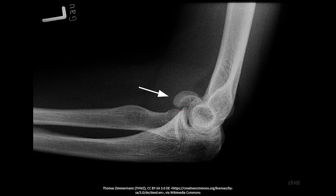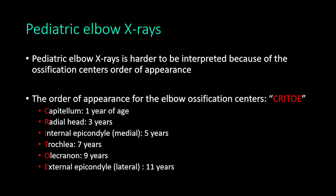In this example of a lateral elbow x-ray showing a capitellum fracture, the fracture causes bleeding and fluid collection that pushes the fat pads away from the joint. The anterior fat pad is elevated and the posterior fat pad is visible and elevated too, confirming joint effusion resulting from the fracture.